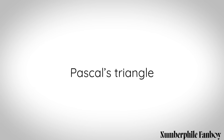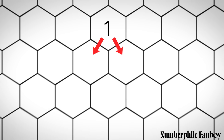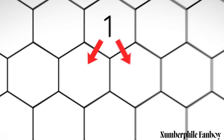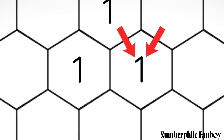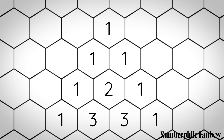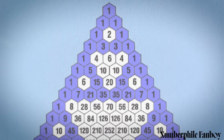Pascal's triangle: start with one in a hex grid, then to find the numbers underneath you add together the two numbers above each cell. Keep going and you end up with Pascal's triangle. This has cool properties — for example, if you color in only the odd numbers you get the Sierpiński triangle.